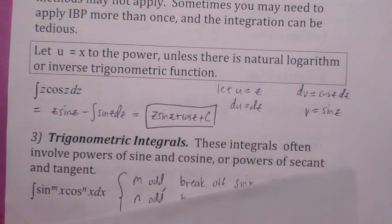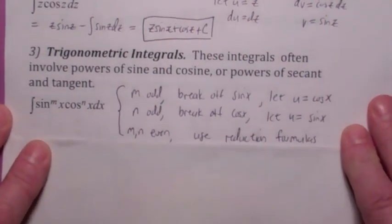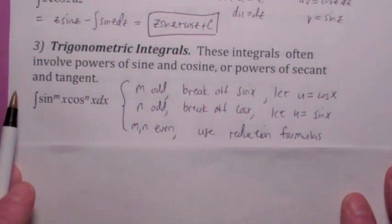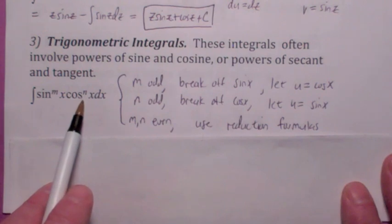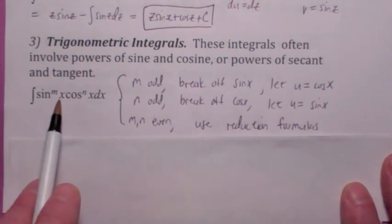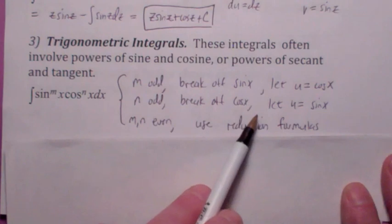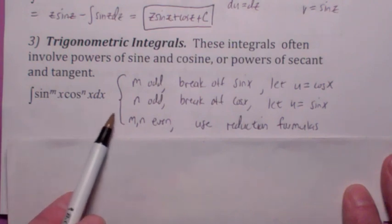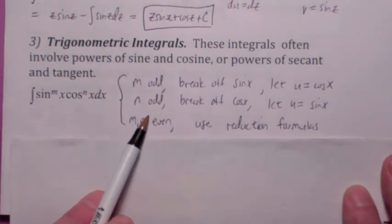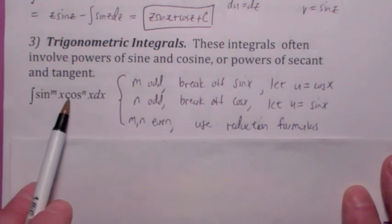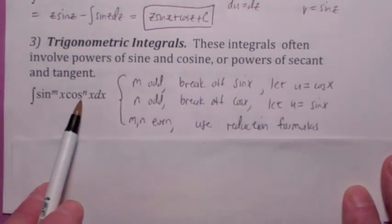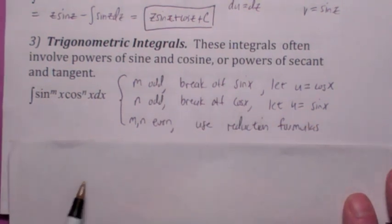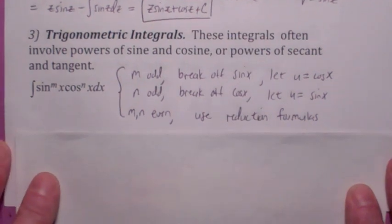All right, another type of technique we learned was trigonometric integrals. Now, the ones we looked at mainly in my class, we looked at powers of sine and cosine. Remember, whichever power is odd, that's where you break off one of those and make that your du. Now, if they're both odd, then it doesn't make any difference which one you'd use. So if the power of sine is odd, you break off a sine and let u equal cosine. If the power of cosine is odd, you break off a cosine and you let u equal sine. What if they're both even? Then you use the reduction formulas for sine and cosine.